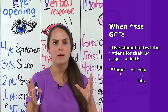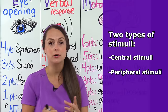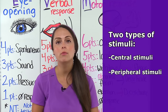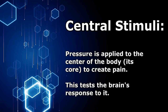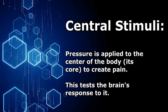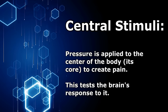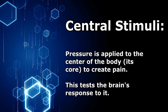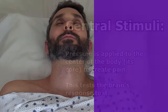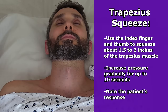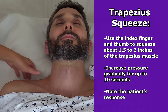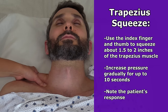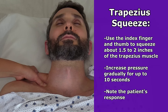Now let me talk a little bit about the pressure and painful stimuli. There are two types you can do to a patient to get a response. One type is called central stimuli, and the other is peripheral stimuli. A central stimuli is when pressure is applied to the center of the body or its core to create pain, and this tests the brain's response to that pressure and pain. One way typically used first is through the trapezius squeeze — use your index finger and thumb and squeeze about one and a half to two inches of the trapezius muscle, gradually increasing intensity for up to 10 seconds, then note how the patient responds.